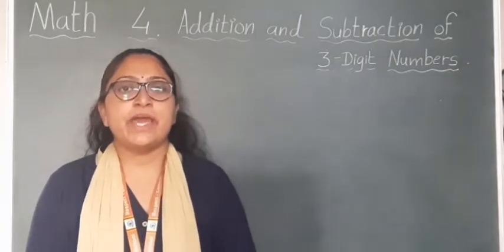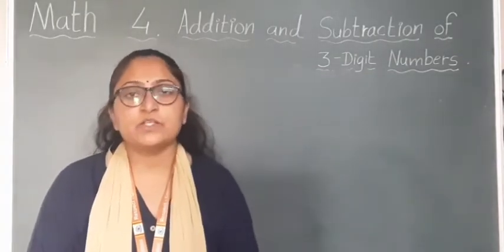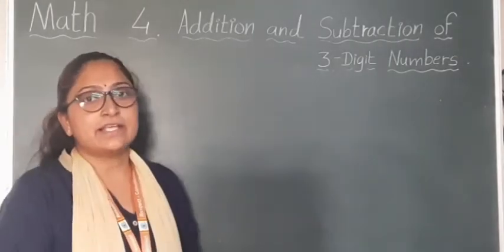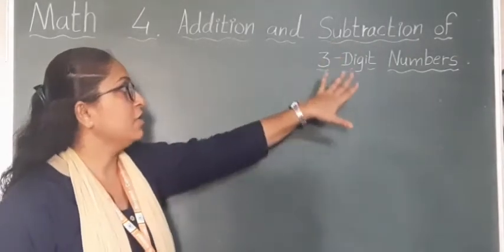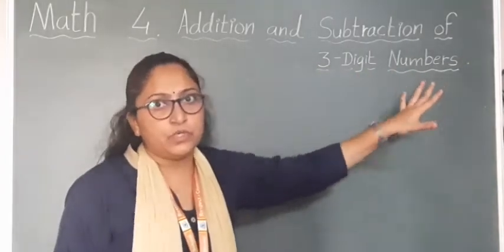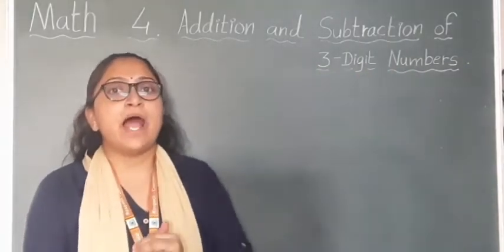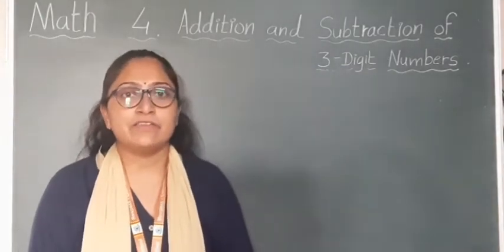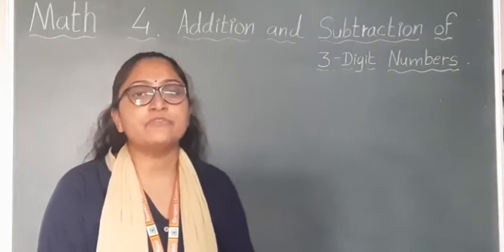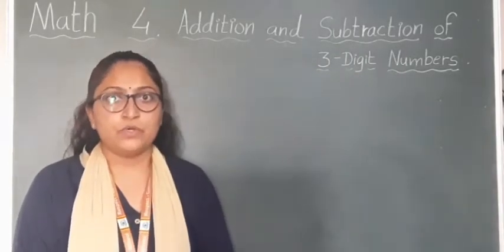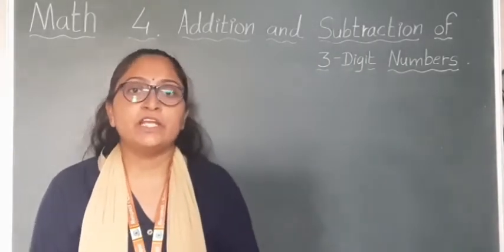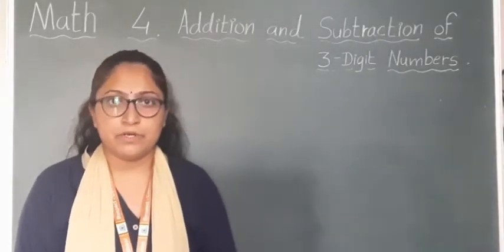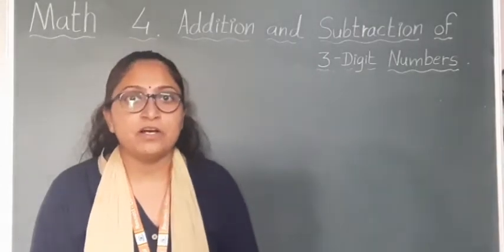Hello everyone, today I am taking math subject. So in maths, let's see chapter number 4, that is addition and subtraction of 3-digit numbers. This is part 3 of this chapter. In part 2 and part 1 we have seen about the addition of 3-digit numbers. So in this video I am going to explain you how to do subtraction of 3-digit numbers. Let's see with an example first.